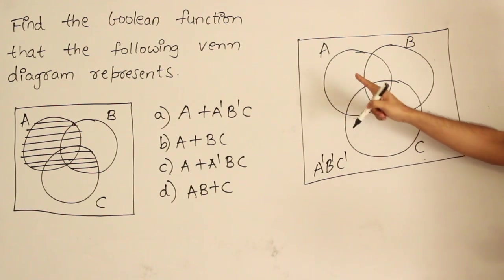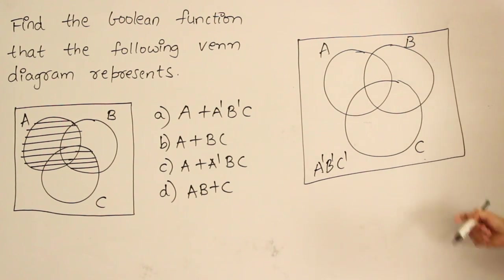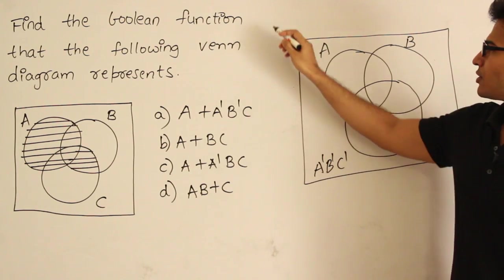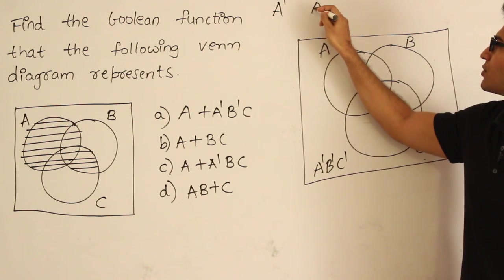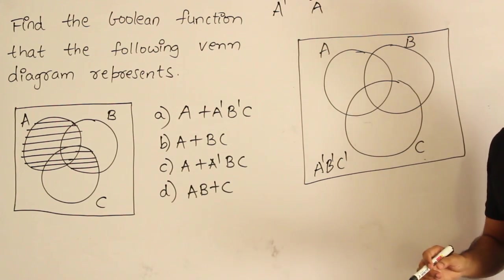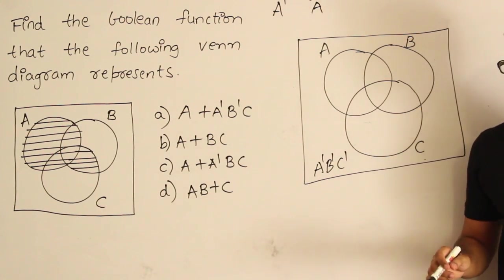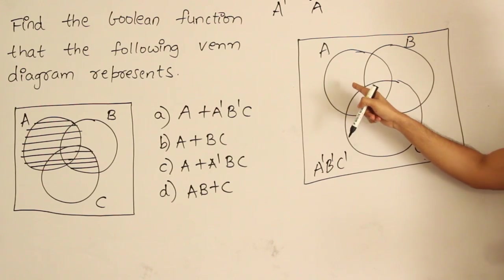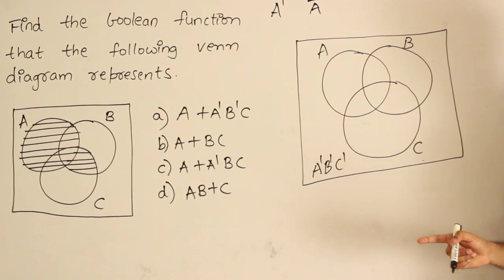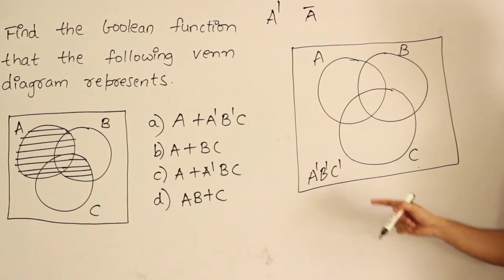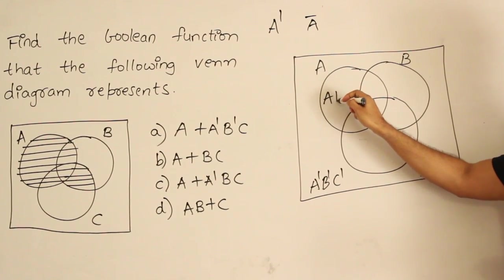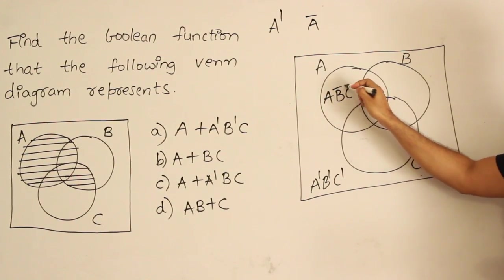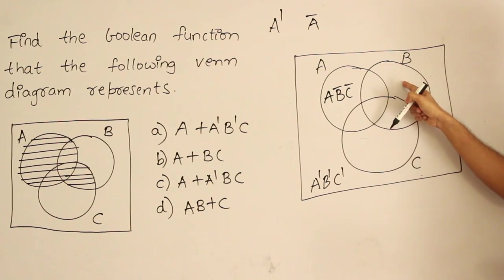Note: sometimes I use A prime notation and sometimes an overline — both mean the same thing, don't get confused. Now, looking at the region where A is present but B and C are not, you represent it as A, B prime, C prime.